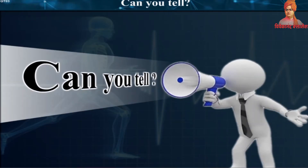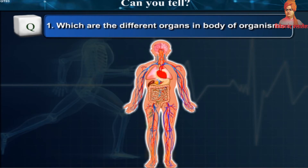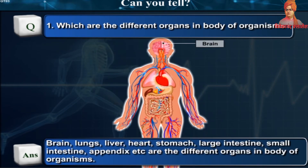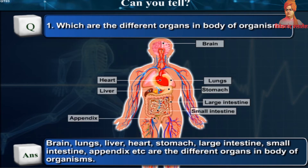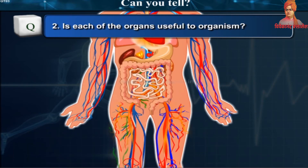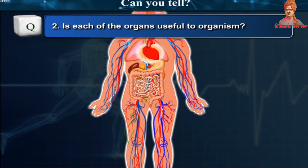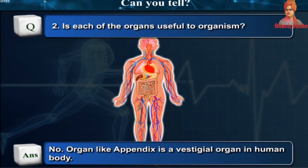Which are the different organs in the body of organisms? Brain, lungs, liver, heart, stomach, large intestine, small intestine, appendix, etc. Is each of these organs useful to organisms? No — the appendix is a vestigial organ in the human body.